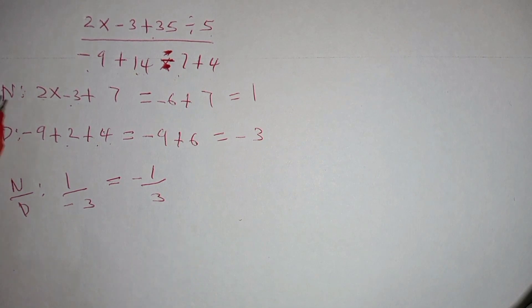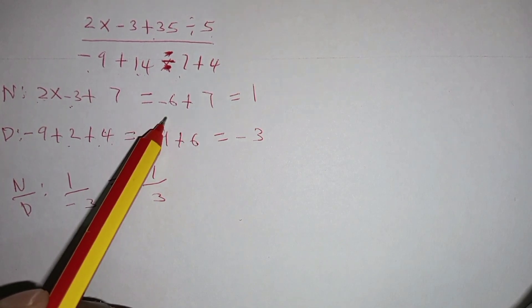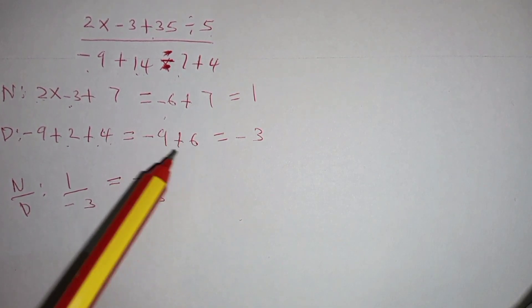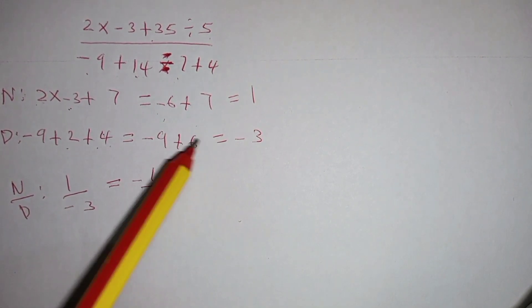Here, remember when you multiply a positive number with a negative number, the result will be negative. That is why here we have negative 6. And when you are adding negative with a positive number, it's like taking the difference.